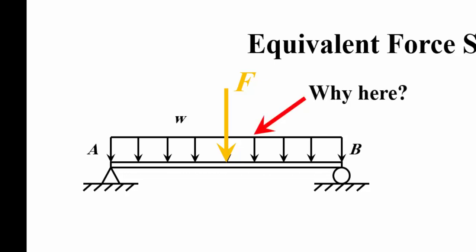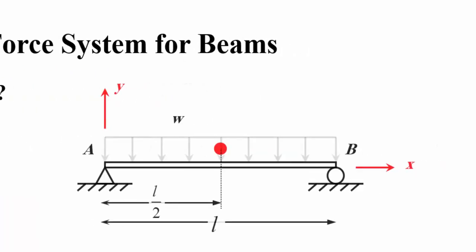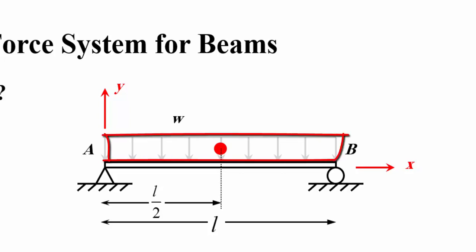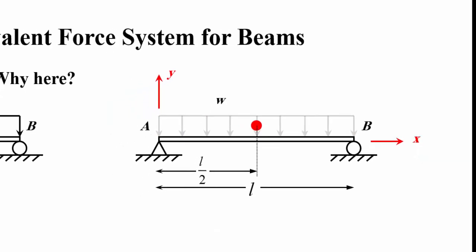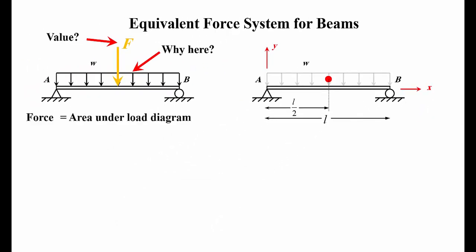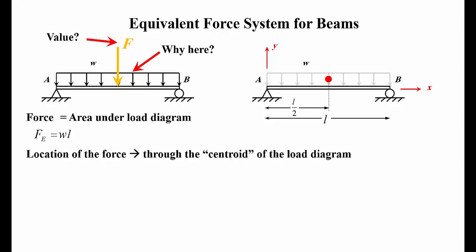We have this simply supported beam. In order to solve for the reactions at support A and support B, we need to concentrate the distributed load — that's what we've been doing: we change W into a concentrated load, call it F. My question is: why do we concentrate it here? And what is the value of F? Looking at this diagram, you see the red dot — this is the centroid of the rectangle formed by load W.